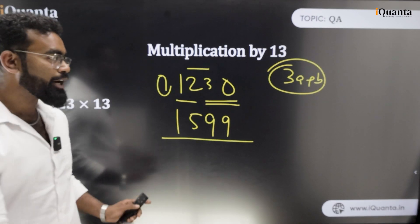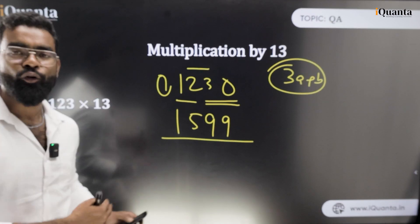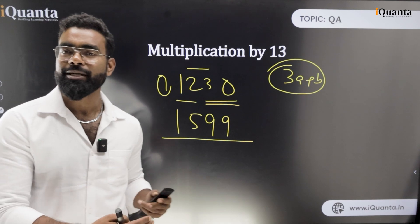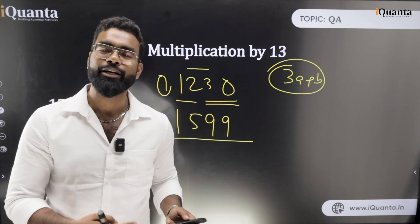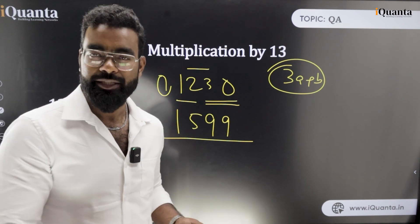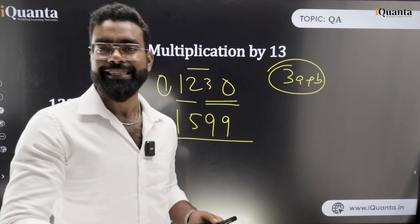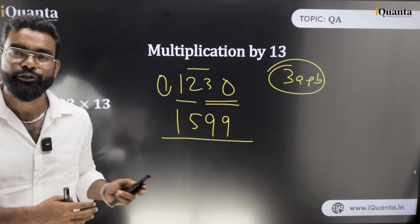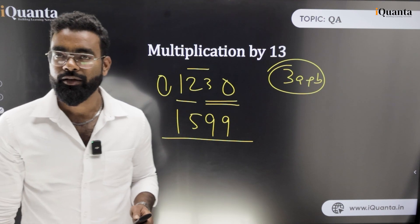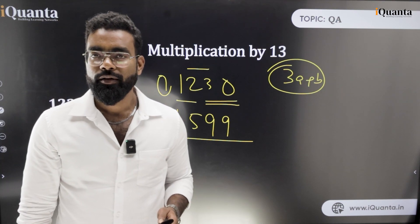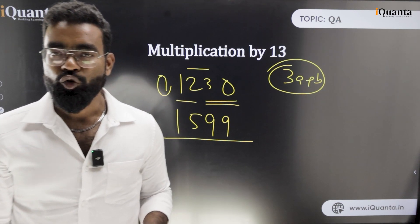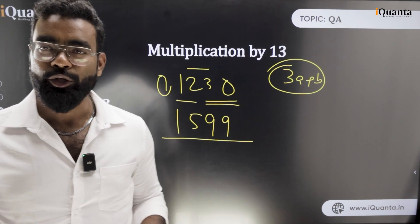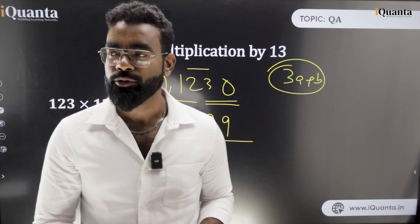So for 14 you can do 4a plus b, for 15 you can do 5a plus b, and so on. This is the general method. See you guys in the next video.